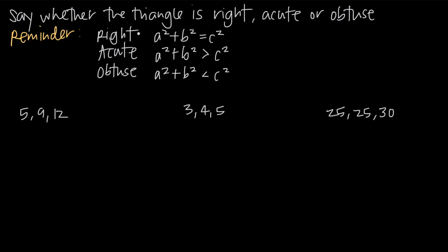A right triangle is a triangle that includes a 90 degree angle. An acute triangle is a triangle that has all three of its interior angles less than 90 degrees. An obtuse triangle is a triangle where one of the interior angle measures is greater than 90 degrees. So what we want to do when we know the lengths of the three sides is set up a relationship and see whether a squared plus b squared equals c squared, a squared plus b squared is greater than c squared, or a squared plus b squared is less than c squared. Depending on which relationship exists, that tells us whether the triangle is right, acute, or obtuse.